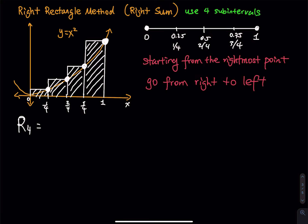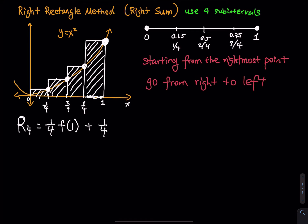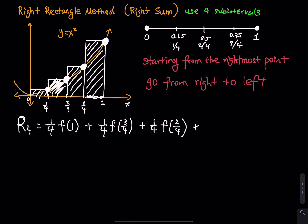Starting from the right, the base of each rectangle is 0.25, which is 1 over 4. The height of the first rectangle is the point on the curve when x equals 1, so we have 1 over 4 times f of 1. The next height is f of 3 over 4, then plus 1 over 4 times f of 2 over 4, and then the last one: base is 1 over 4 and height is f of 1 over 4.